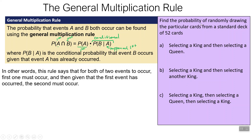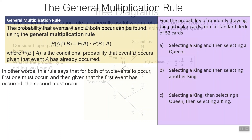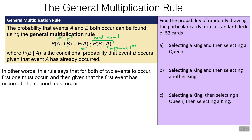Let's look at it with some cards. So we've got four kings and four queens. What's the probability of selecting a king and then selecting a queen? Well, that means we want the probability of selecting a king, times the probability of selecting a queen given that a king has already been selected. The probability of getting a king is four out of 52. Now we want the probability of getting a queen given that we already took a king out — there are still four queens, but only 51 cards left. So the answer is four out of 52 times four out of 51.